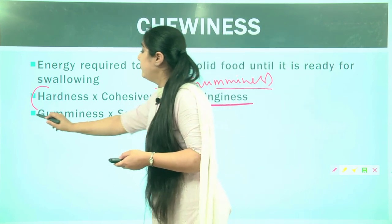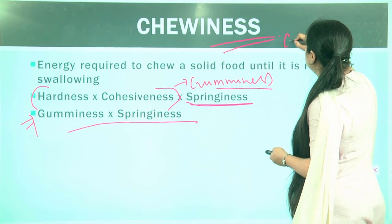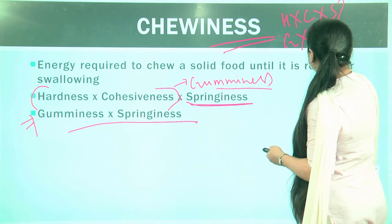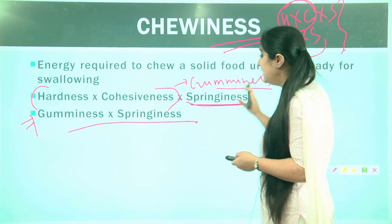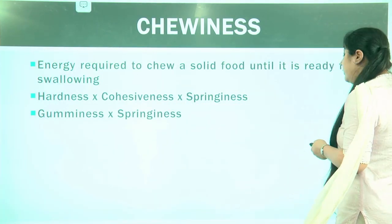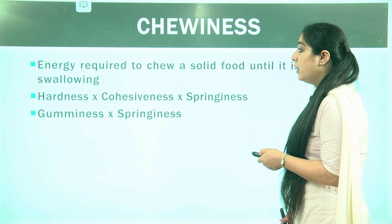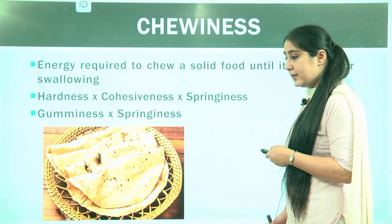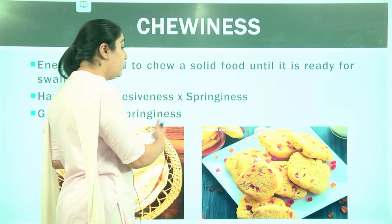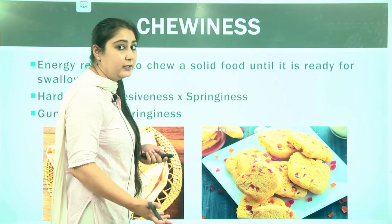Chewiness can be calculated as gumminess multiplied by springiness, or equivalently hardness multiplied by cohesiveness multiplied by springiness. Since hardness multiplied by cohesiveness equals gumminess, we can also write chewiness as gumminess multiplied by springiness. For solid food products such as chapatis or biscuits, we calculate chewiness rather than gumminess.